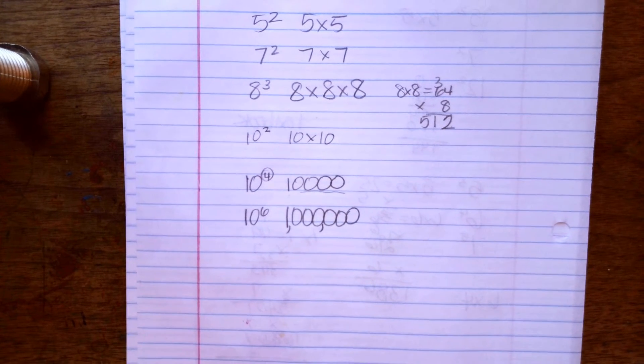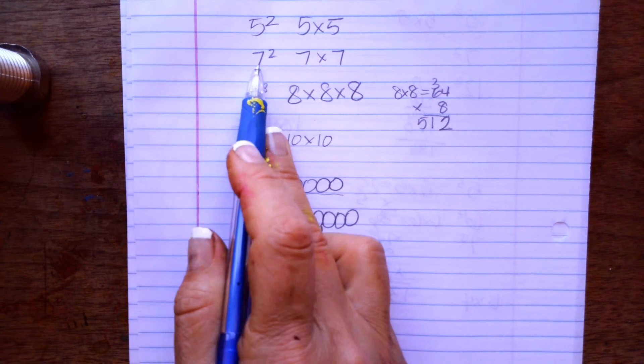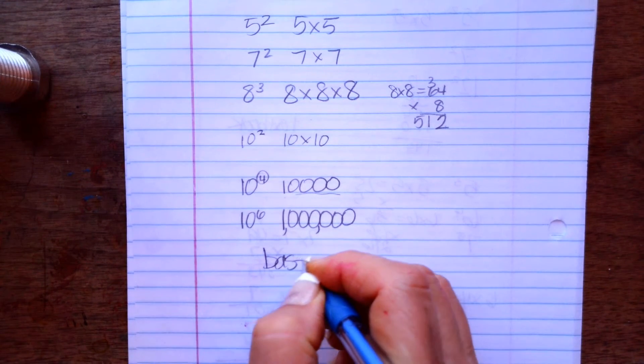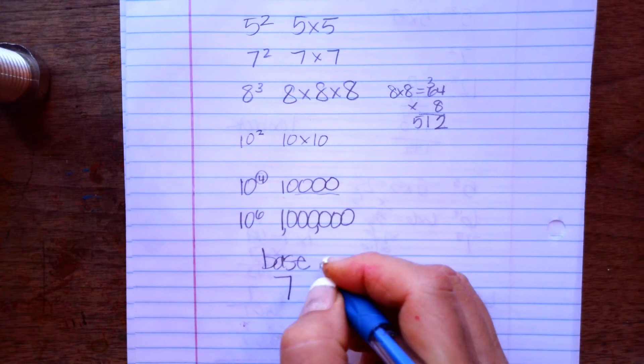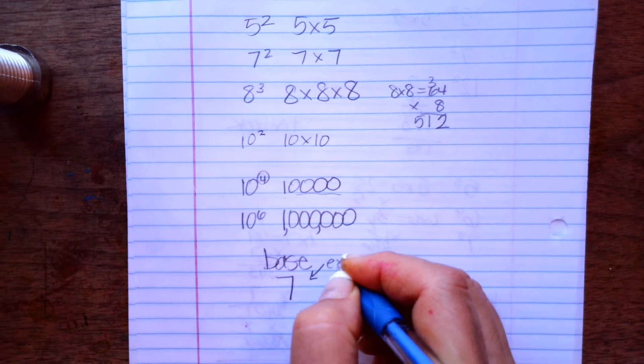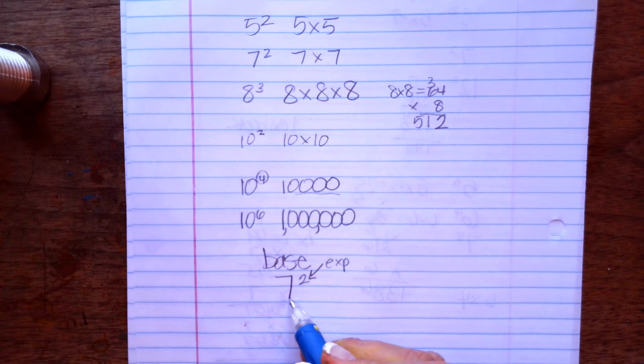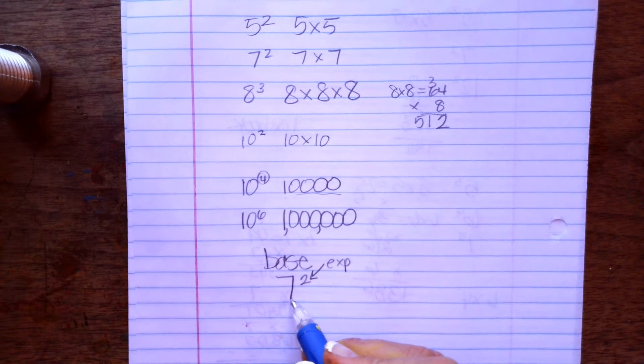You just have to get it out of your head that it's 8 times 3 or 7 times 2. It is not. This is the base. And this part right here is the exponent. And the exponent tells you how many times you multiply 7 by itself.